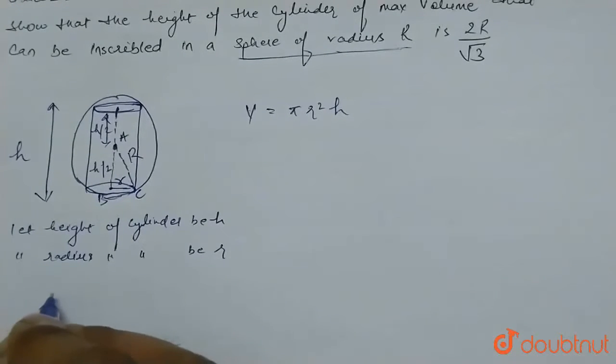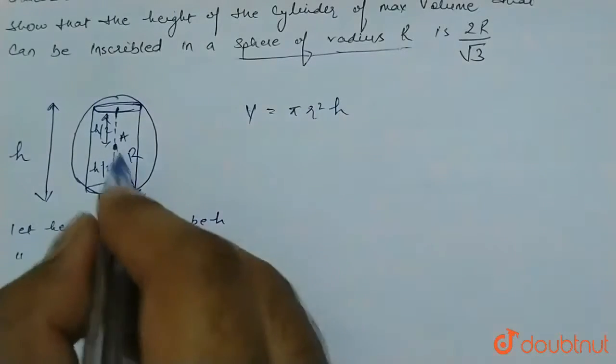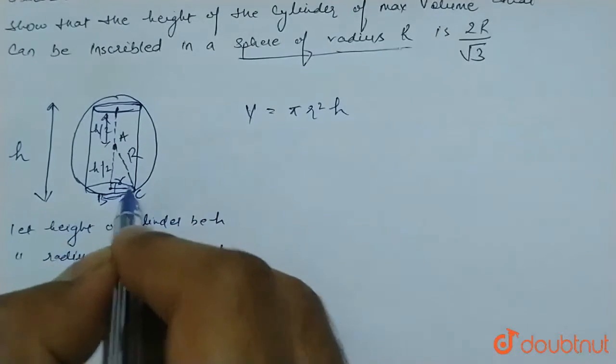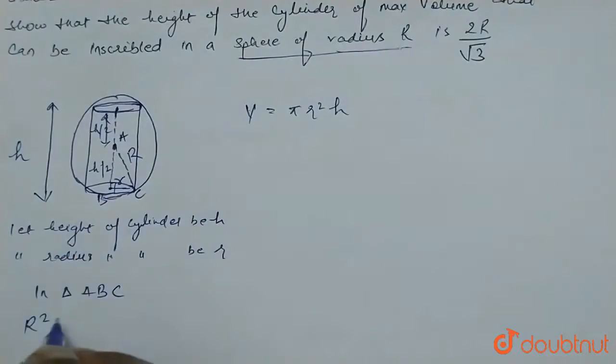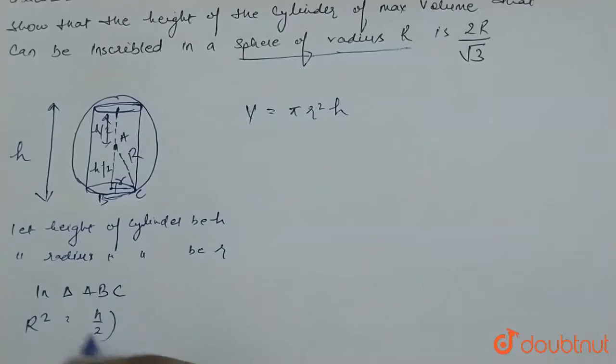Let this triangle be ABC. First we will find the relation between h and R from this triangle. In triangle ABC, we can say that R² (because R is hypotenuse and this is 90 degrees) equals (h/2)² plus small r².